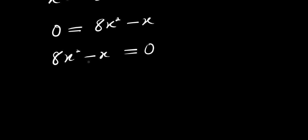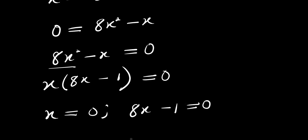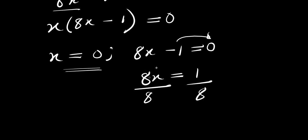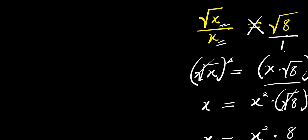The next thing I can do is factor out x. I have x times (8x minus 1) equals 0. So right now I can have x equals 0, and 8x minus 1 equals 0. For the second equation, I move negative 1 over, giving 8x equals 1, then divide both sides by 8 to get x equals 1 over 8. So I have x equals 0 and x equals 1 over 8. Now let's solve this using a different method.